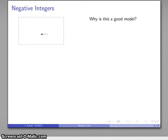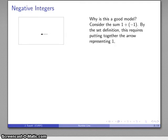So why would we do something like this? Why does this make for a good model? Well the reason it makes for a good model is the following. Consider the sum 1 + (-1). So again by our set definition of addition, what this means is I want to put together two sets.